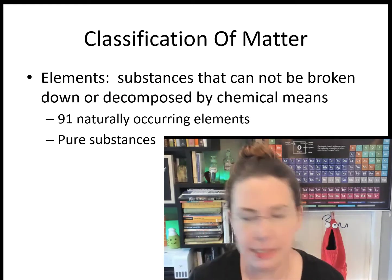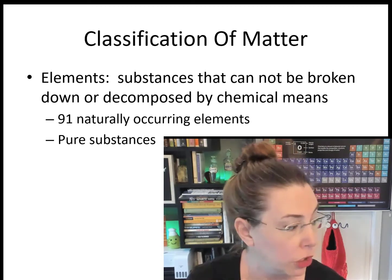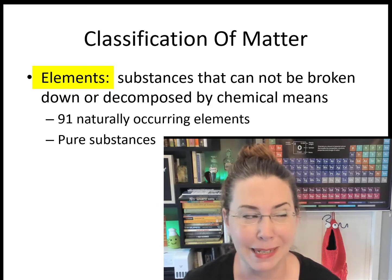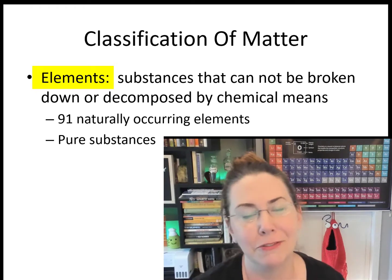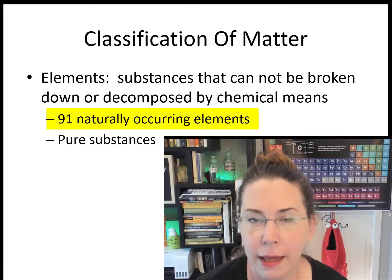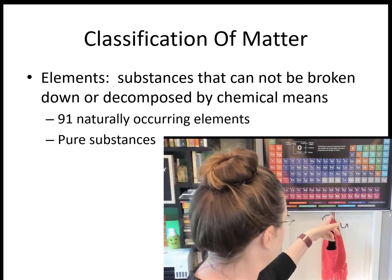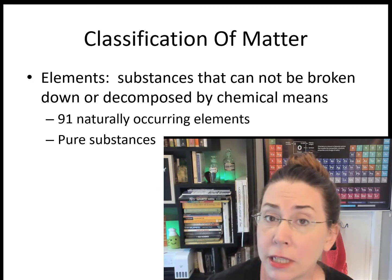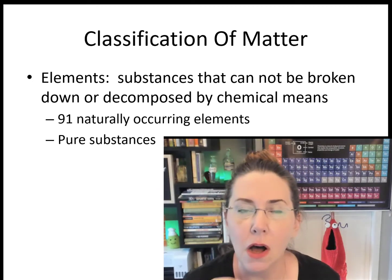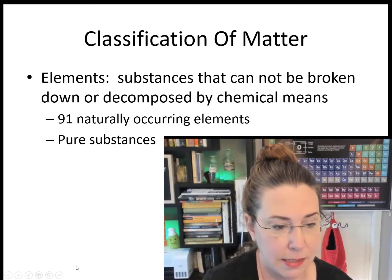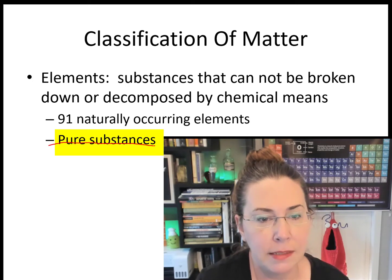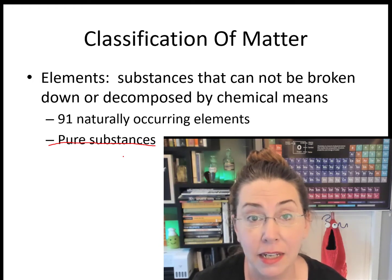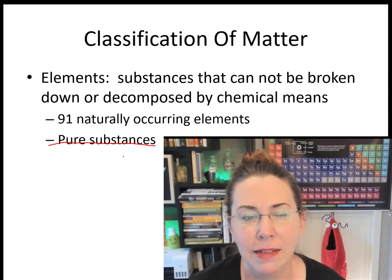Let's talk about generalized classifications of matter. When we talk about matter we're usually talking about different elements. Elements are substances that cannot be broken down or decomposed by chemical means. If you look at the periodic table, there are 91 naturally occurring elements. This periodic table goes all the way up to 118, but everything above element 91 is artificially produced — essentially man-made. All elements are considered to be pure substances, meaning there's only one type of matter in that substance. If I have a lump of pure gold, the only thing in it is the element gold — that would be a pure substance.